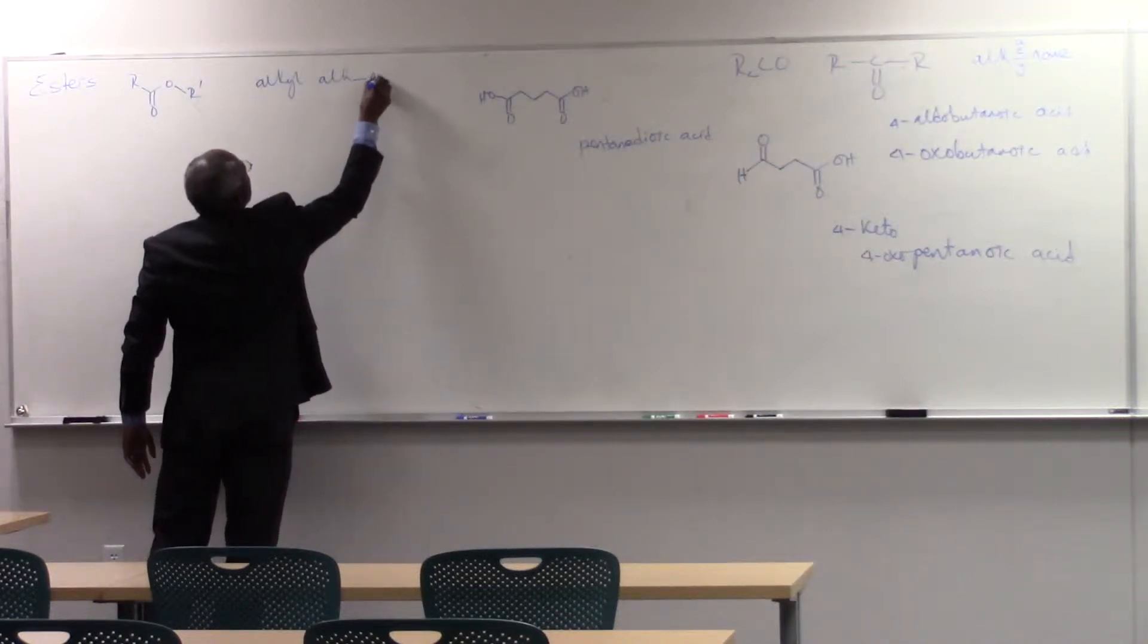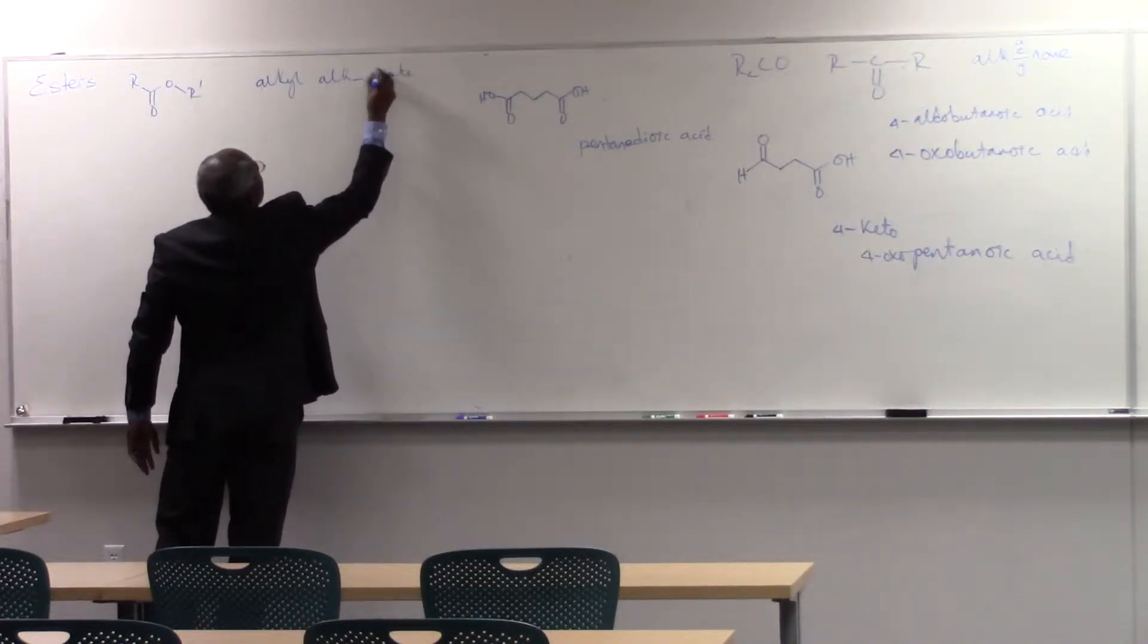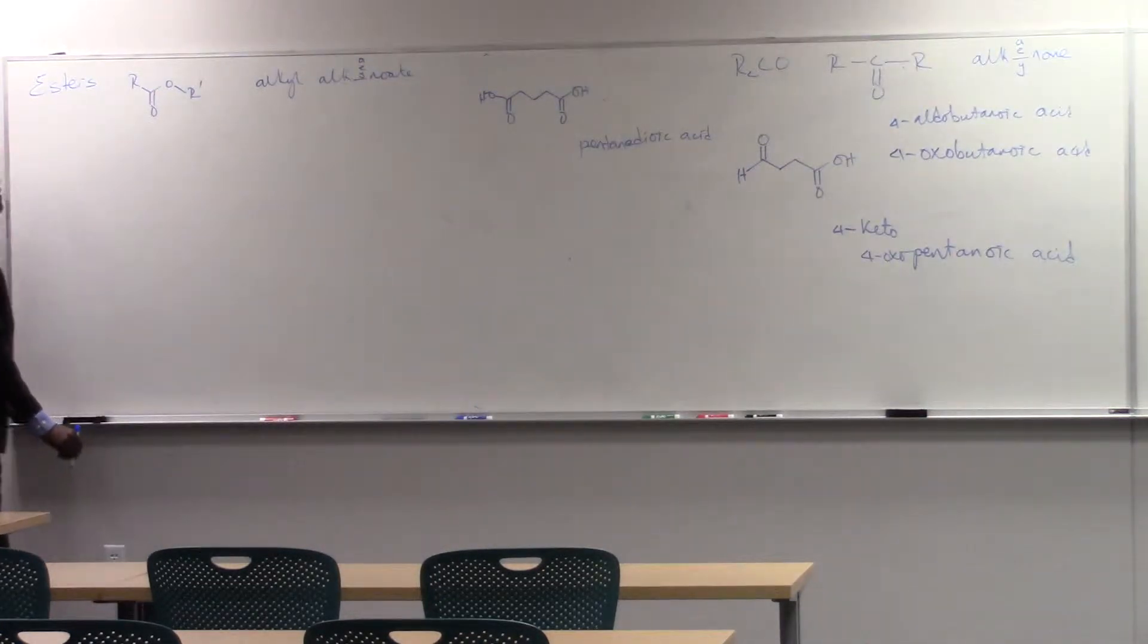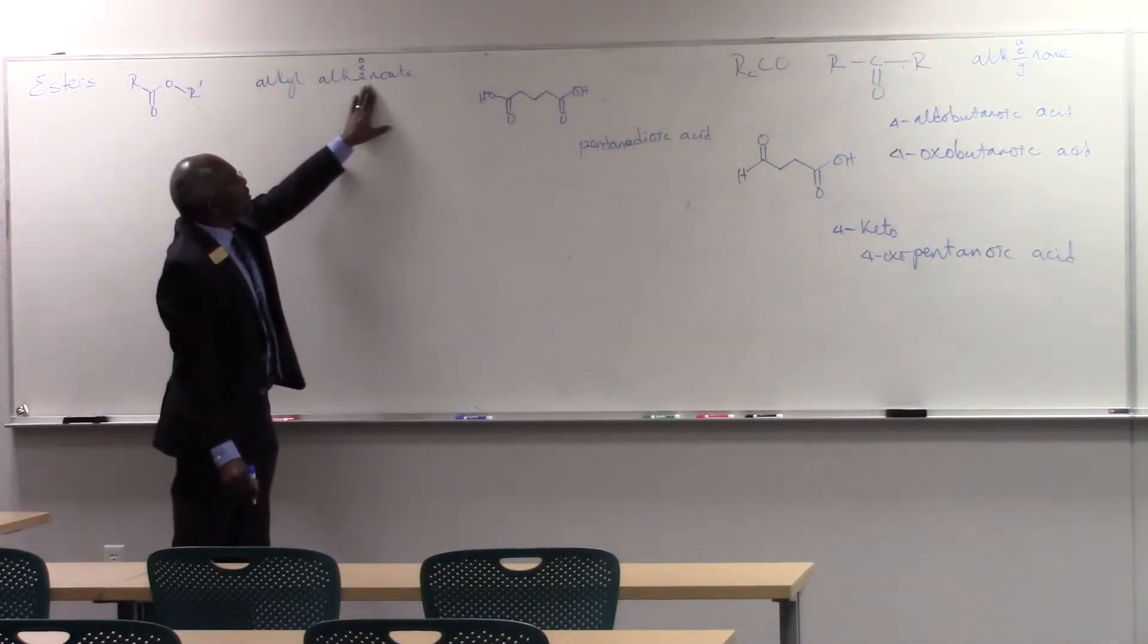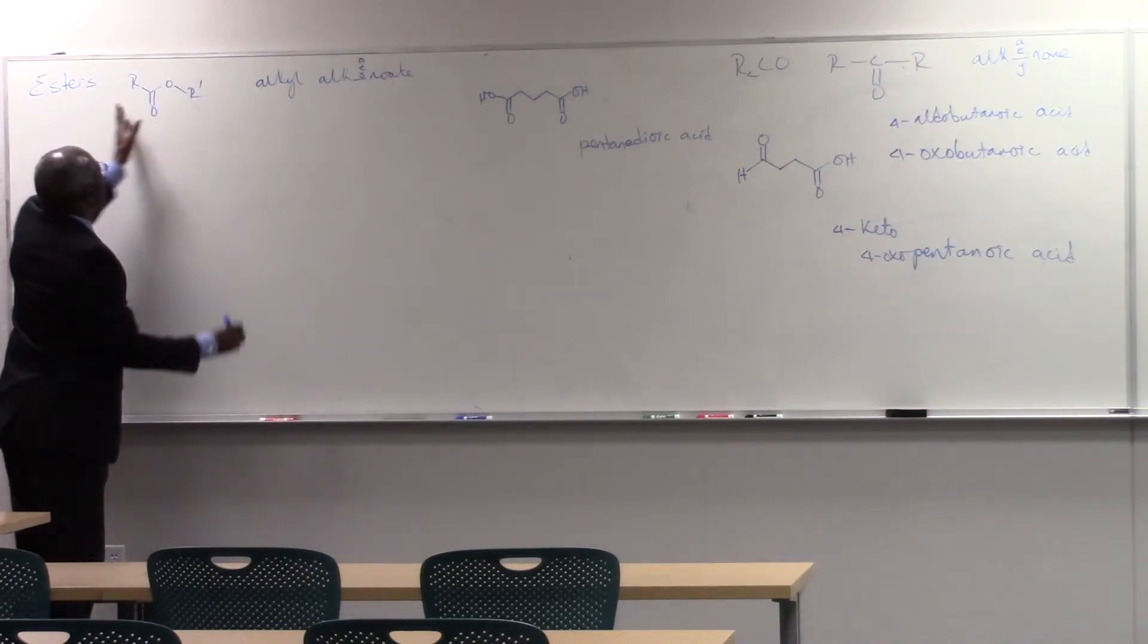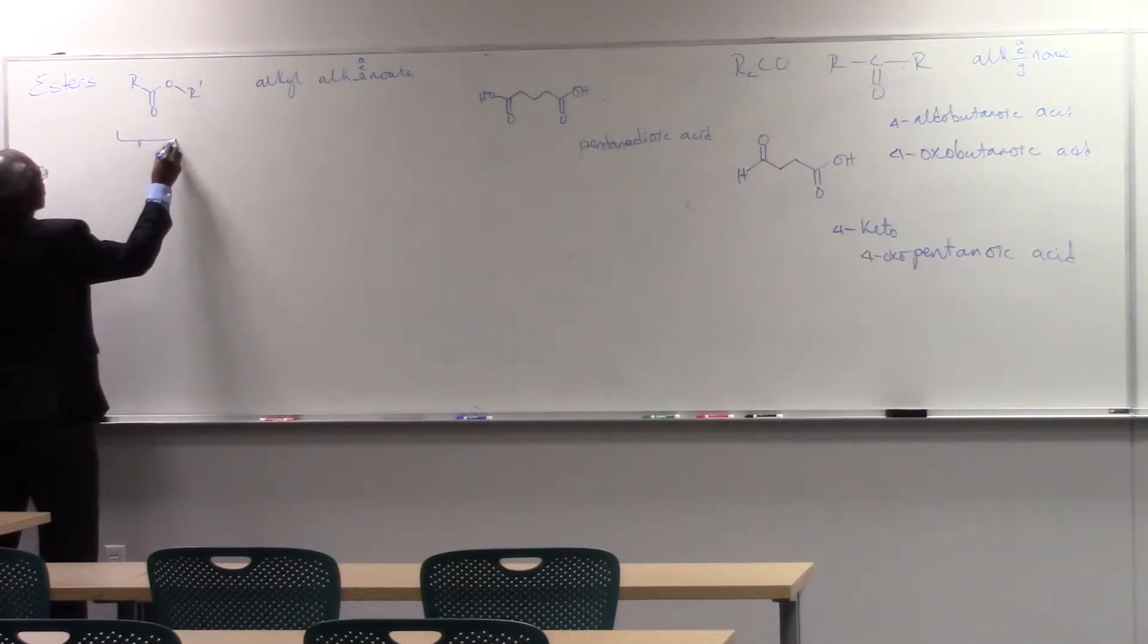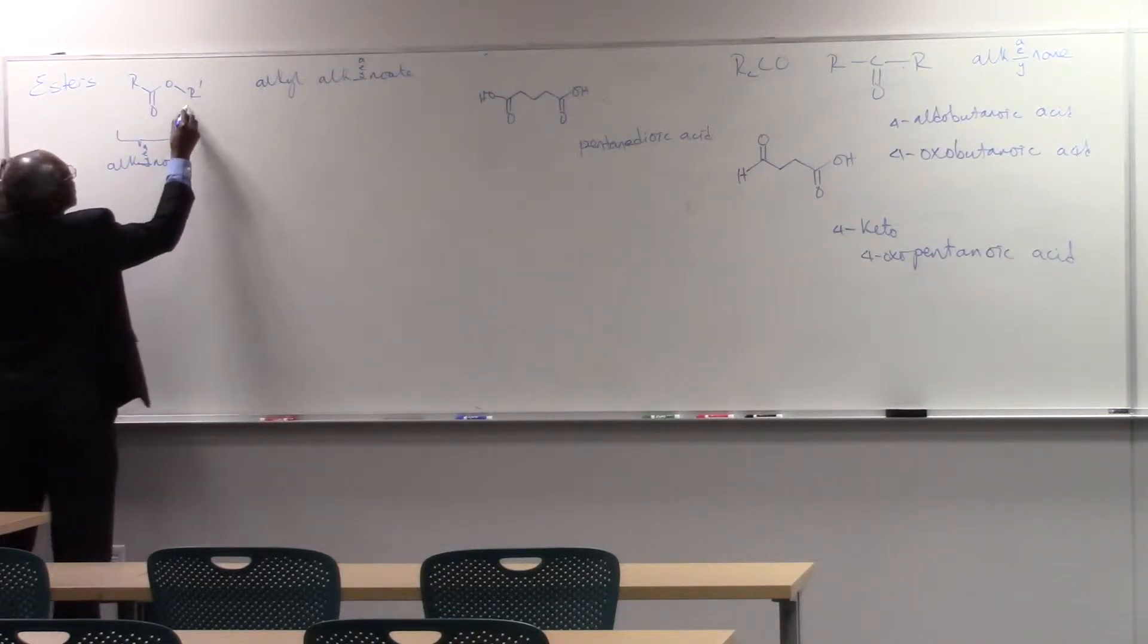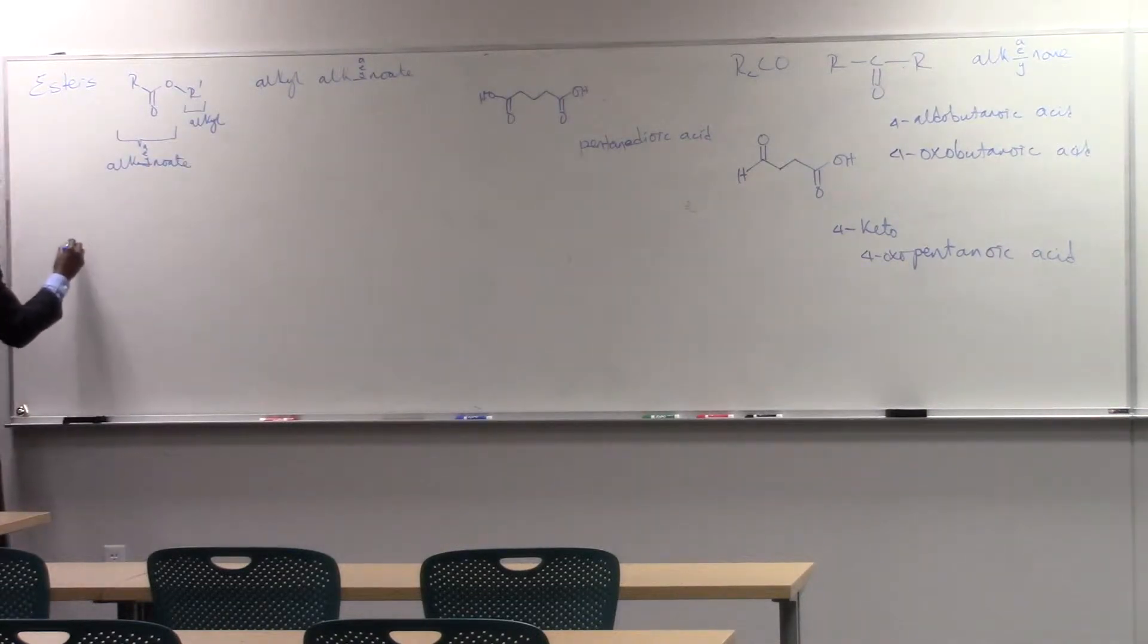Alkanoate. This is the A-E-Y. This portion comes from here. So this portion is the Alkanoate portion, A-E-Y. This portion is just the Alkyl portion. Simple case.